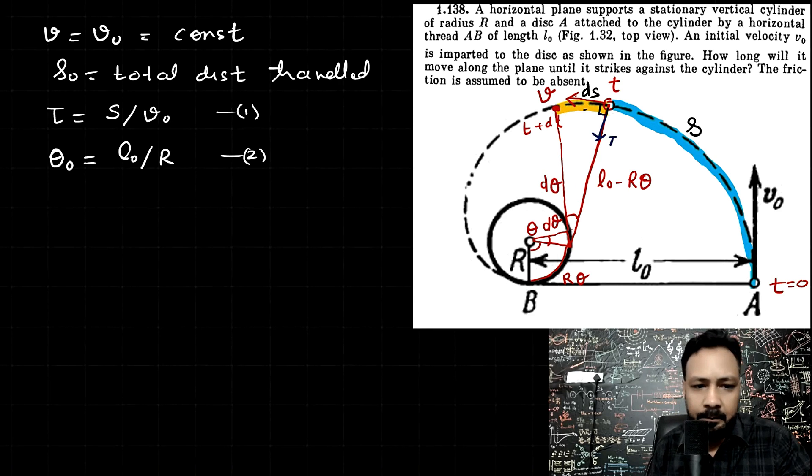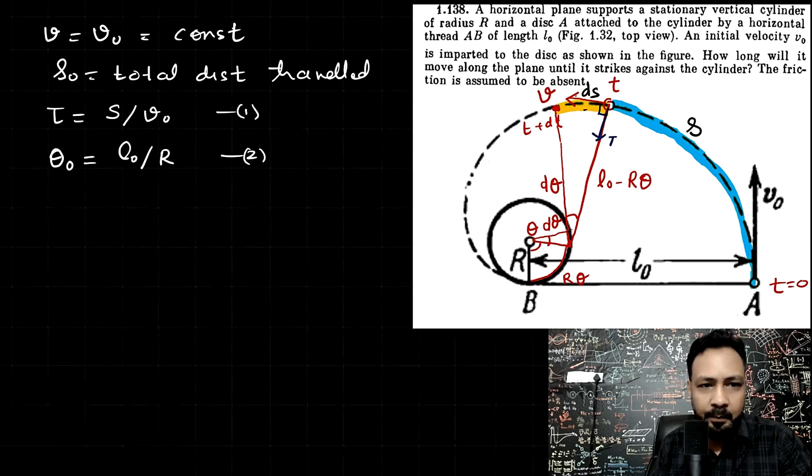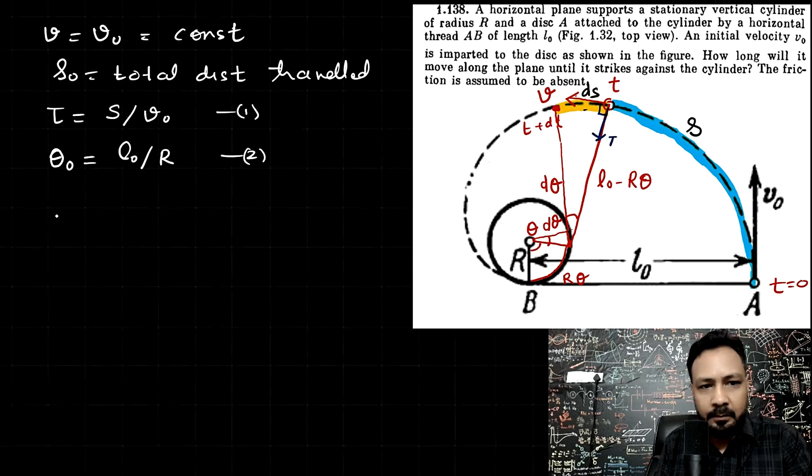Now see one thing, the interval that I'm taking, this interval is so small that we can think that from here to here, the particle is moving in a circle of radius L naught minus R theta and this is the instantaneous center of that circle. So this ds could be thought of as the arc of that circle, whose radius is L naught minus R theta and that arc is subtending angle d theta at the center. So you can write ds is equal to L naught minus R theta into d theta.